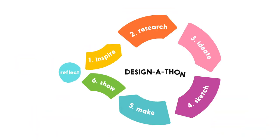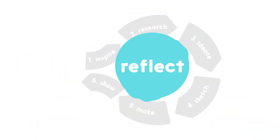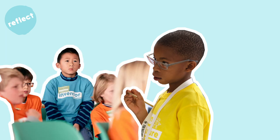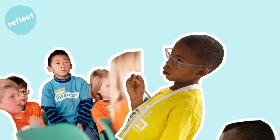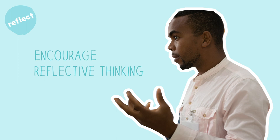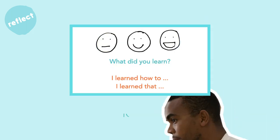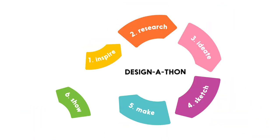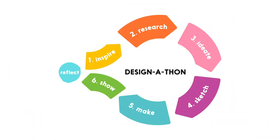Step 7: Reflect. This is when children learn to develop their reflection skills and to give and receive constructive feedback. Your role is to guide the process and encourage a reflective way of thinking. In this step you use the reflection guidelines. These are the 7 steps to host a successful design-a-thon workshop. Have fun!